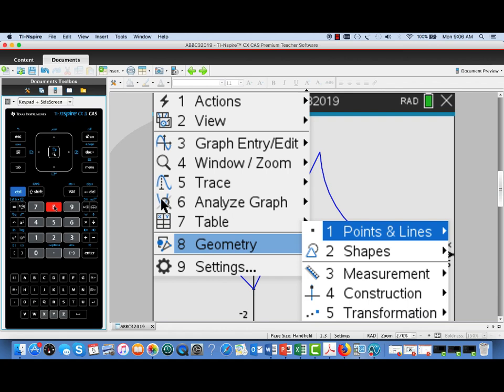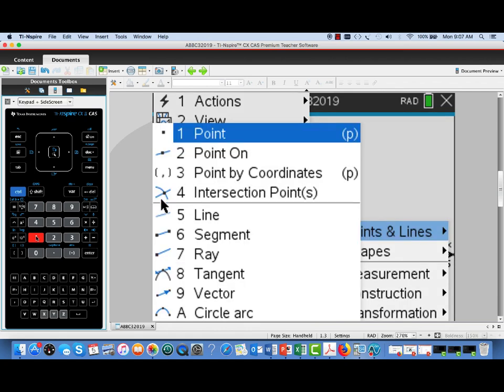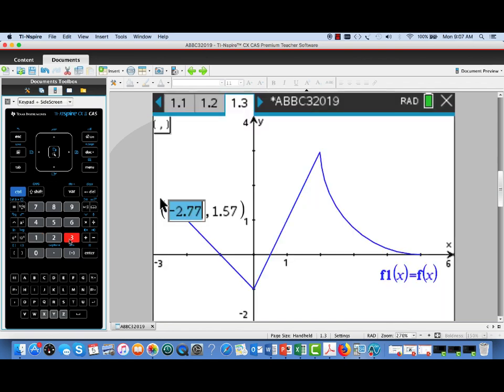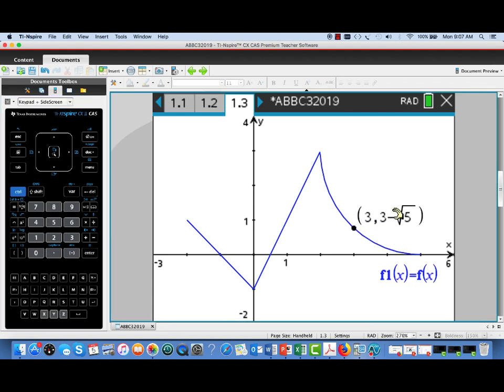Okay, so I'm going to go to the geometry menu, pull up points and lines, and actually choose to specify a point by its coordinates. Now the point that we're given in the stem of the problem is that 3, 3 minus the square root of 5 is on the graph. So let's see if our graph matches up to that. So I'm entering those coordinates, and boom, there we go. So that looks good, and that should be reassuring to us that we have a good graph here.